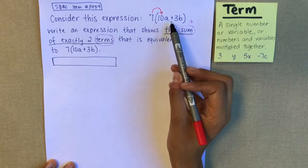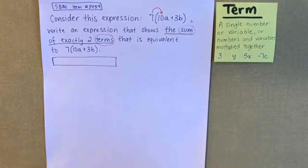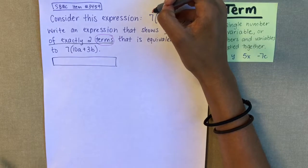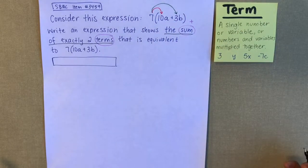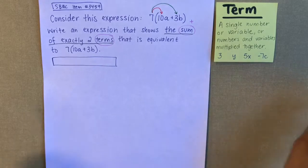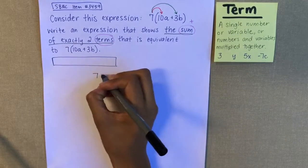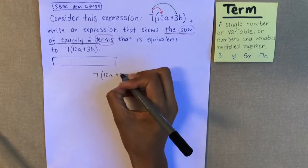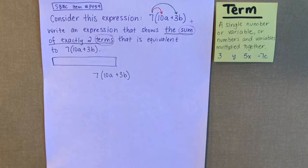So we're multiplying the number on the outside — in this case 7 — times both of these terms. Let's simplify this. We have 7 times 10a plus 3b. You can pause the video right now and try this on your own.